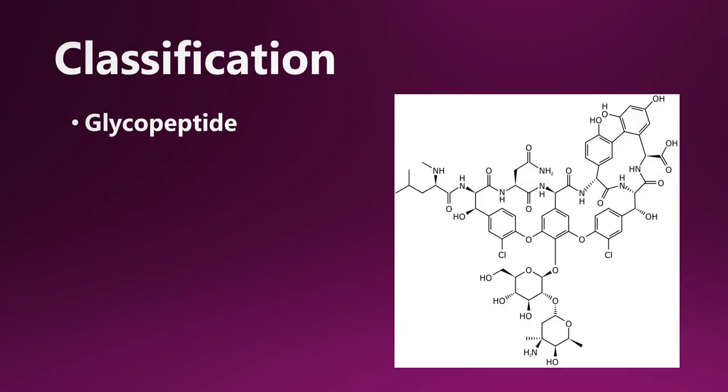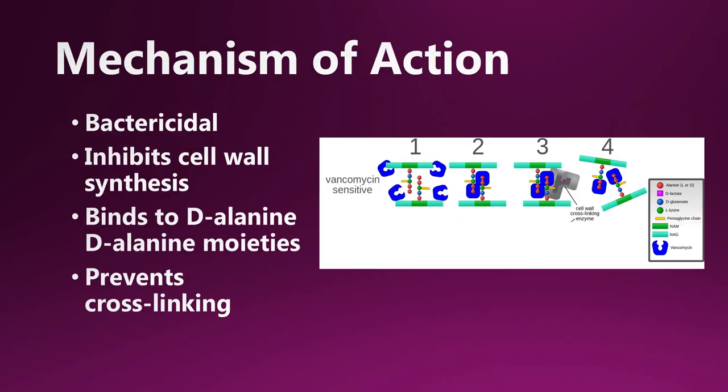In terms of classification, there's not too much to know here. Technically, it's a glycopeptide. Vancomycin is kind of a drug on its own. It doesn't belong to any specific class, but it's classified as a glycopeptide based on its chemical structure, which you can see here. This is probably not very high yield for USMLE or COMLEX, but vancomycin is a glycopeptide.